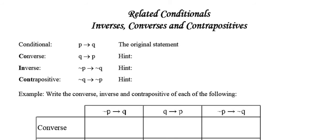The wonderful thing about each of these is that any time you're asked to produce one of them, they will always give you a hint that tells you how to produce it. For instance, the converse — if I look at the first two letters of the word converse, C and O, those first two letters tell me exactly what I need to do to the conditional in order to obtain the converse. C and O tells me I need to change the order around.